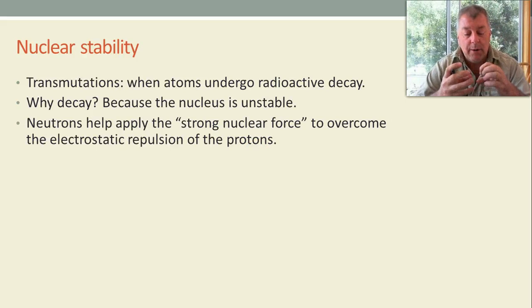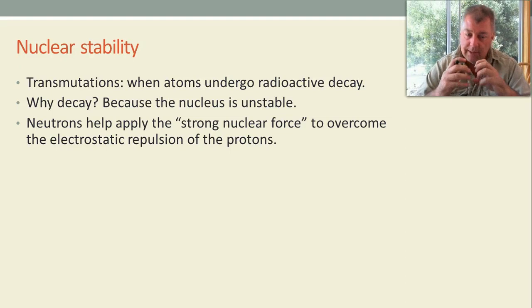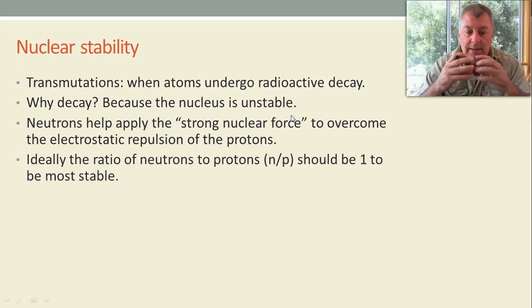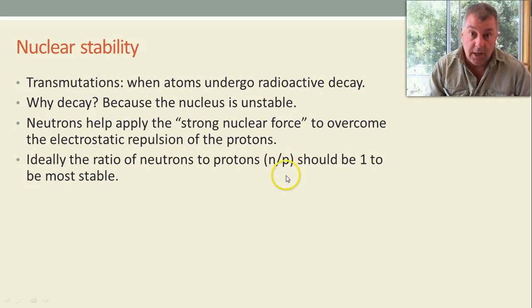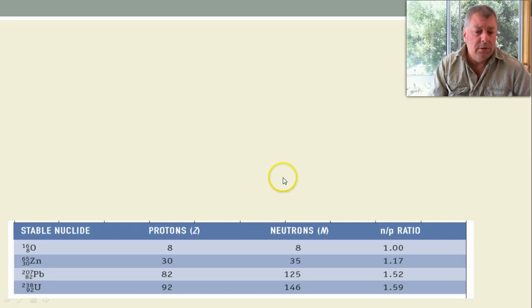Well, the answer is neutrons. Neutrons apply what's called the strong nuclear force. One of the strongest forces we know. It overcomes the electrostatic repulsion of the protons. And so you've got to have the right number of neutrons to keep all those protons together. And ideally, the ratio of protons to neutrons is one to one. And that would make the most stable nucleuses. But not all of them are.